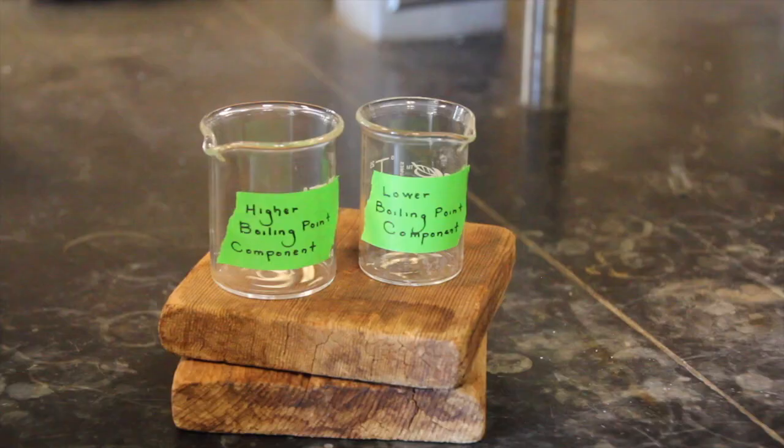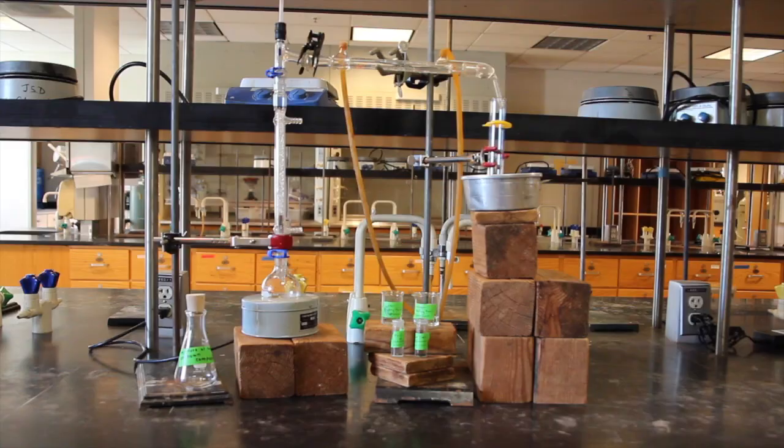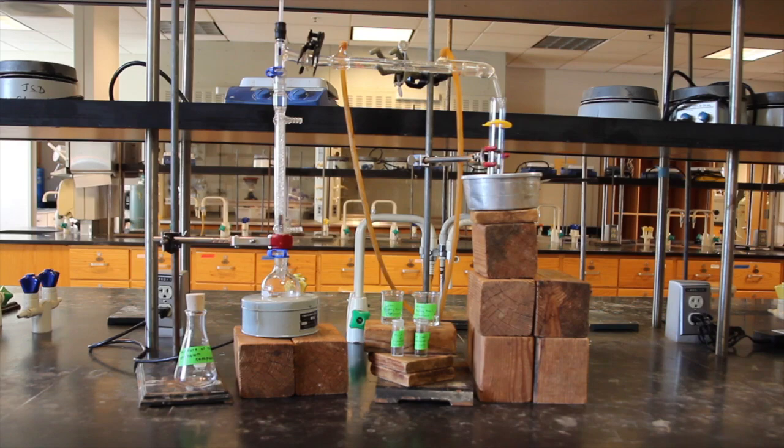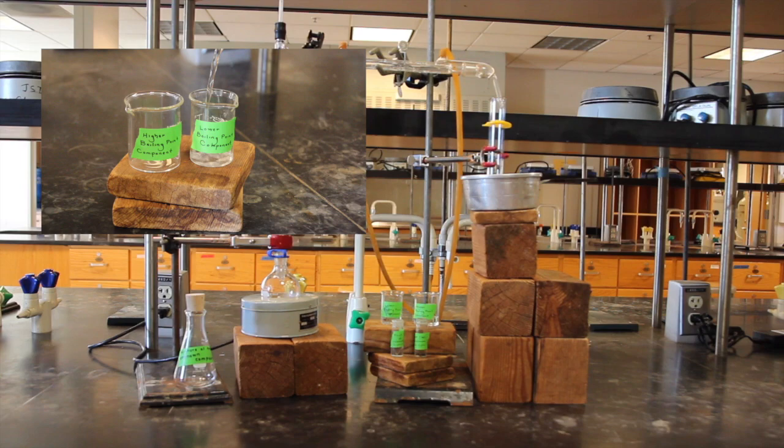Save the first milliliter from your distillation as a separate sample in a labeled conical vial. Next, you will be collecting the rest of the first distillate, emptying the graduated cylinder as needed into a labeled beaker or flask. Continue to do so until the distillation temperature has risen to approximately five to ten degrees Celsius above the apparent boiling point of the lower boiling component.